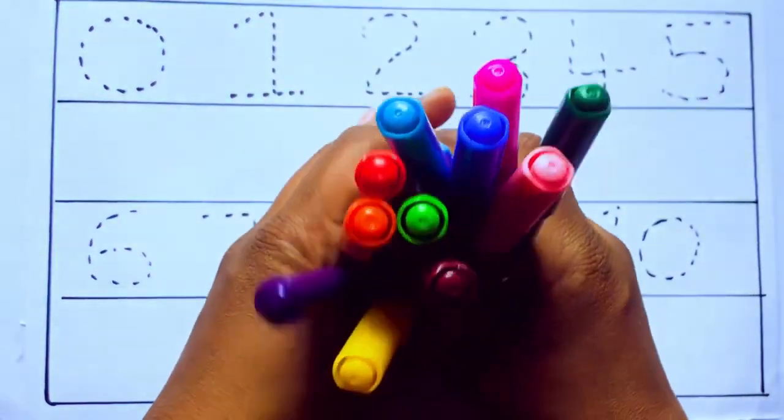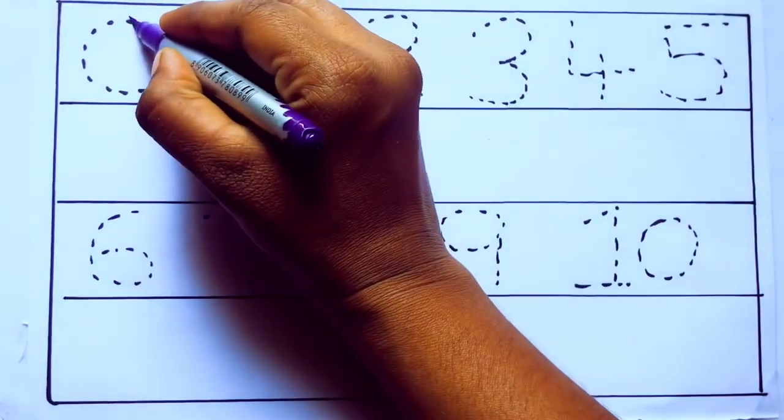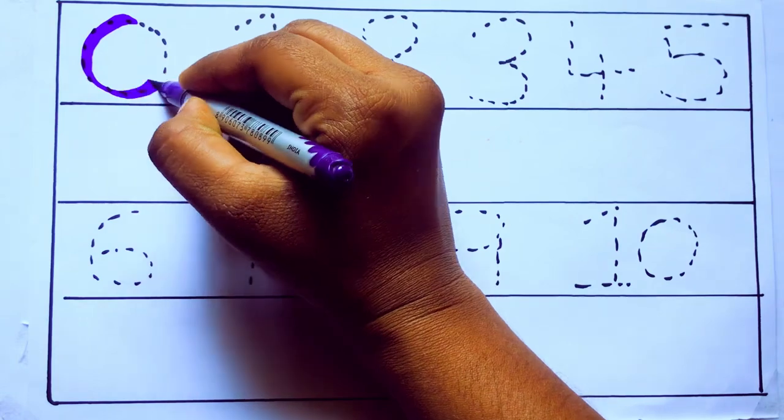And pink color. Let's draw numbers. Violet color, 0, Z-E-R-O.